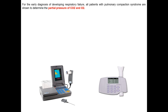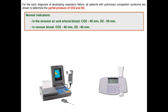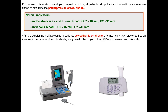For early diagnosis of developing respiratory failure, all patients with pulmonary compaction syndrome should have the partial pressure of CO2 and O2 determined. With the development of hypoxia, polycythemic syndrome is formed, characterized by an increasing number of red blood cells, a high level of hemoglobin, low ESR, and increased blood viscosity. Polycythemic syndrome may develop because of increasing erythropoietin production from the kidneys as a response to hypoxia.